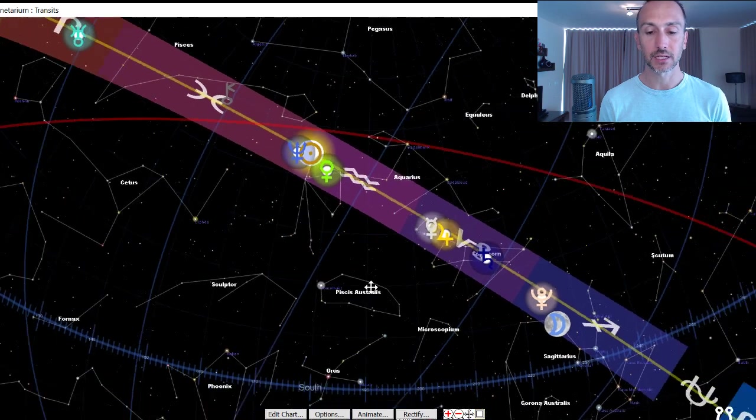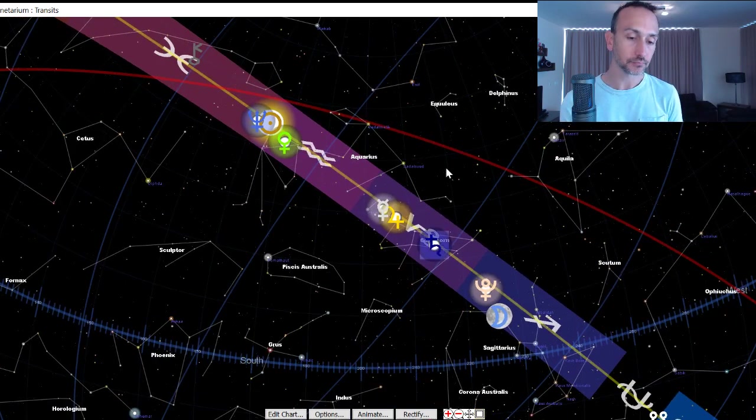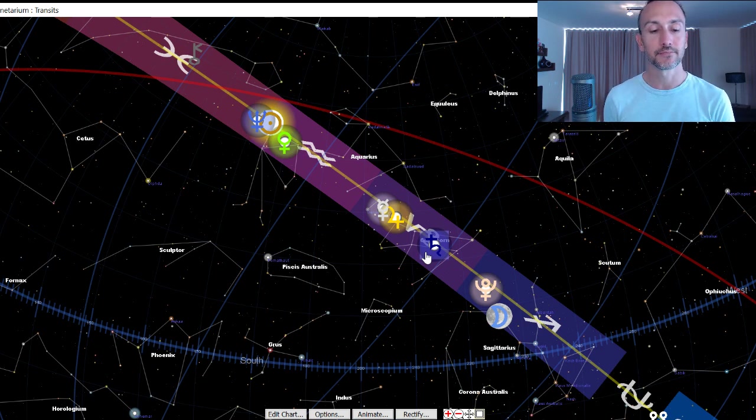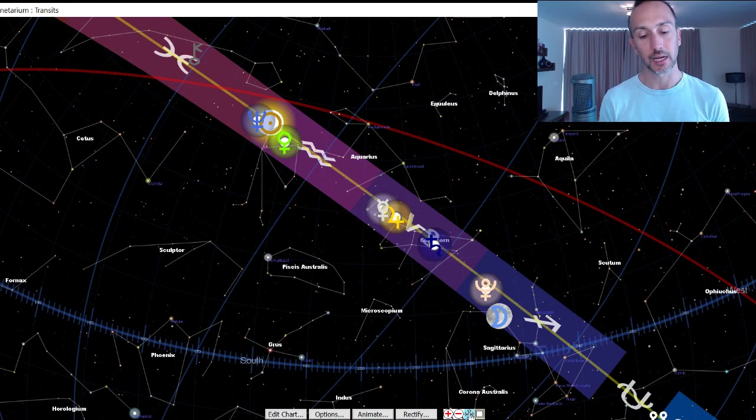Also, we do have Mercury still in Capricorn up until Saturday at the weekend, where our minds are still quite grounded. And I think it's still good to be thinking about things in terms of the long term. What do we want to accomplish? Maybe what do we want to achieve? This really is the major theme of the year with both Saturn and Jupiter here in Capricorn.